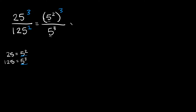So now we have the same base — we've got a 5 on top and a 5 on the bottom — so we can simplify these. Starting with the top, we have 5 squared in parentheses raised to the 3rd power. In order to simplify the exponents, all you have to do is multiply them. So 2 times 3 is equal to 6, so here we really have 5 to the 6th power.